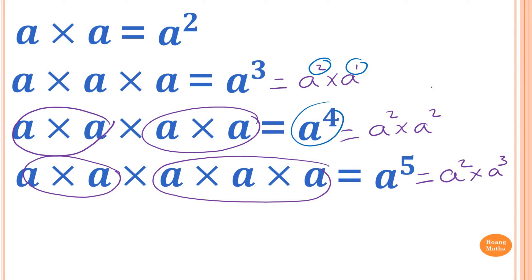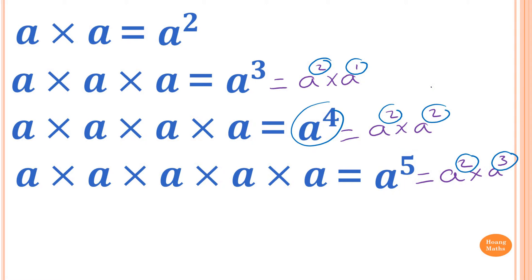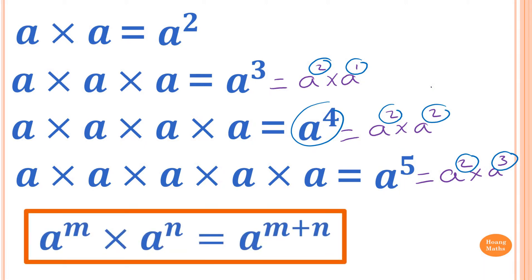For A power 4, it is the same as A squared times A squared, which is 2 plus 2 equals 4. For A to the power 5, it is the same as A squared times A cubed, meaning 2 plus 3 is 5. So A squared times A power 3 is A to the power 5. In general, A power M times A power N is equal to A to the power of M plus N.